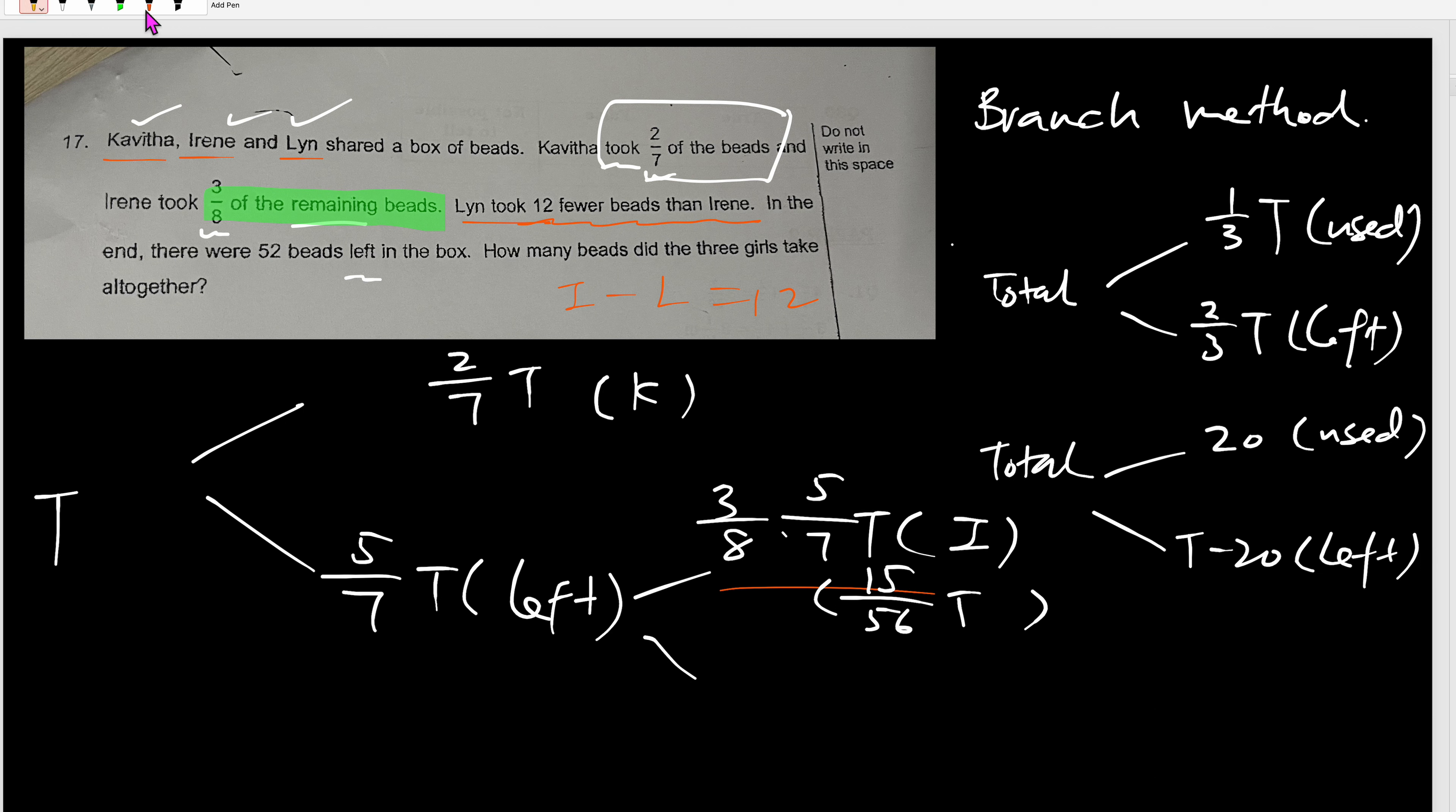So this is not Lin. But what is Lin then? Lin is 12 fewer than Irene. So if this is Irene, so Lin will be 15/56 T minus 12. That will be Lin. And with this plus the 52, that will be the left. Does it make sense? And the left is also 5/8 times the 5/7 T. So now, this is the left. This is Irene. So 5/8 times this T is the left, and this left happened to be 52 and Lin. So therefore, you equate these two.